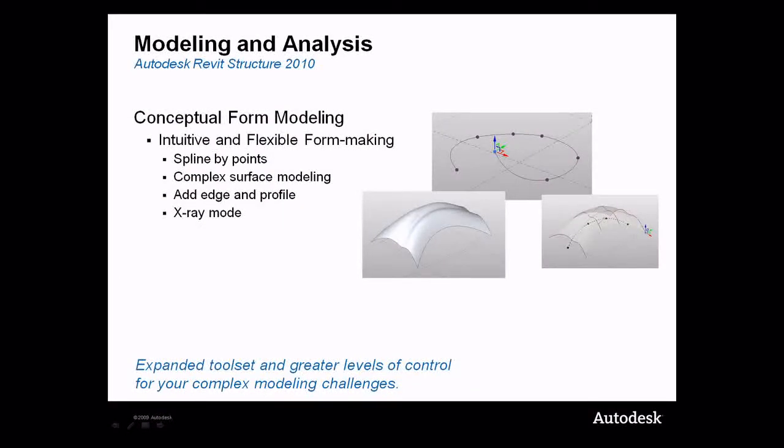The toolset provided to create these forms helps give users the flexibility to work using global coordinates for easier modeling of complex structures. Use splines with points to manipulate surfaces that are NURB-like with complex doubly curved surfaces. X-ray mode allows users to modify points along surfaces in an environment that incorporates control and visualization.